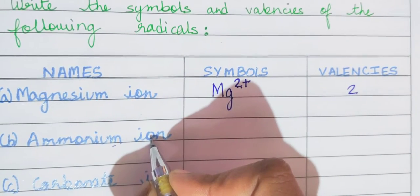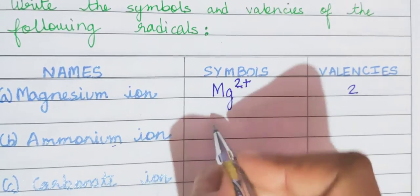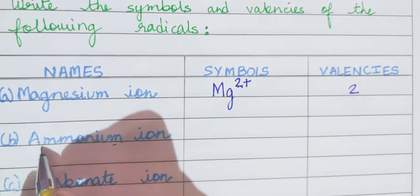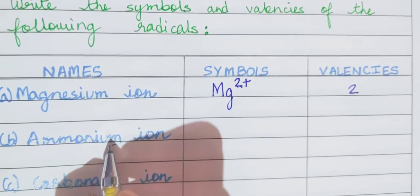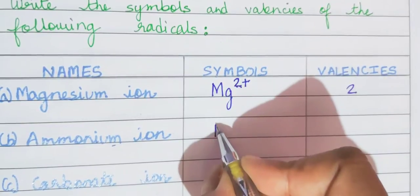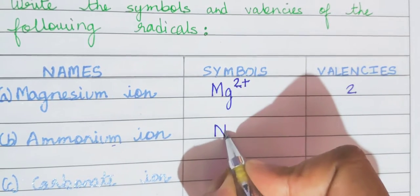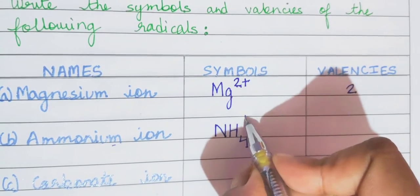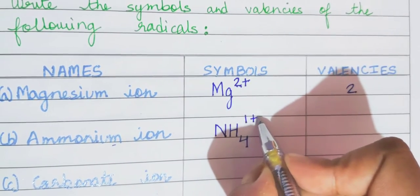Ammonium ion. Now ammonium, what is the formula? Why am I saying formula? Because it is a radical. That is why I am telling formula. So what is the formula of ammonium radical? It is NH4. And what is the valency? 1 plus.